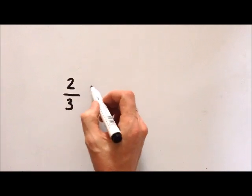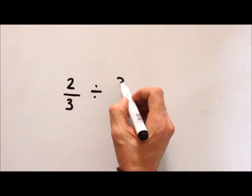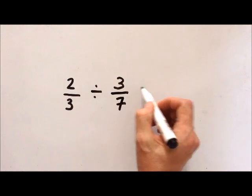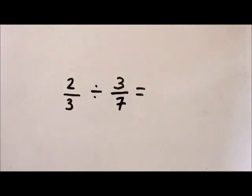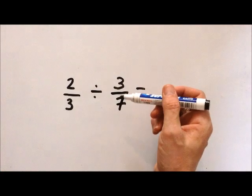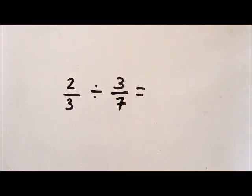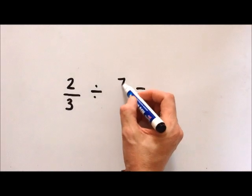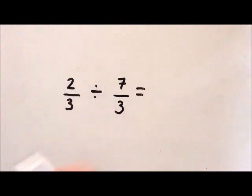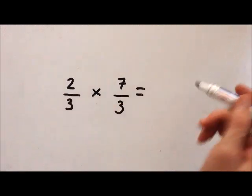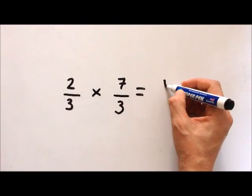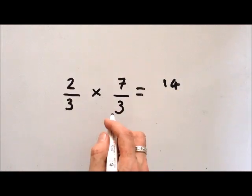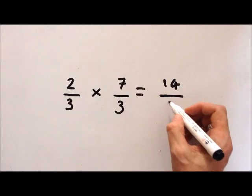Let's do another one. 2 thirds divided by 3 sevenths equals. Just the same as the last problem, we swap the denominator and the numerator over — we find its reciprocal. The 7 goes on top and the 3 on the bottom. Then we change this to a multiplication. 2 times 7 is 14, and 3 times 3 is 9.